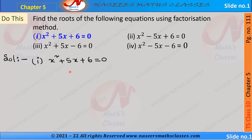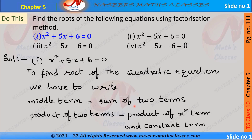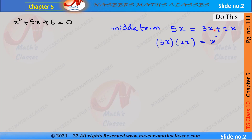The first problem is x² + 5x + 6 = 0. To find the factors of this quadratic equation, we have to write the middle term 5x as the sum of two terms, where the product of those two terms equals the product of the x² term and the constant term. So 5x is written as 3x + 2x, and their product 3x × 2x equals 6x².